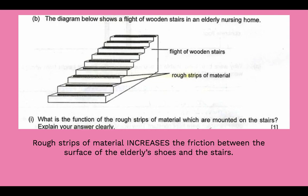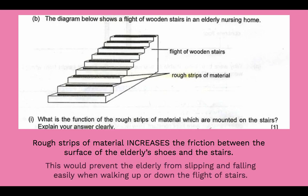Rough strips of material increase the friction between the surface of the elderly's shoes and the stairs. You have to also relate it back to the context of the question. So you have to include the second sentence which is how this would prevent the elderly from slipping and falling easily when walking up or down the flight of stairs.